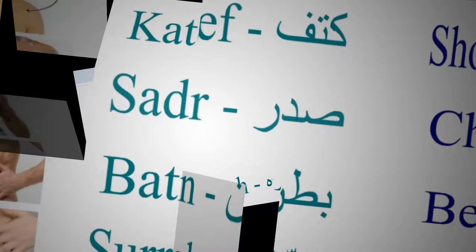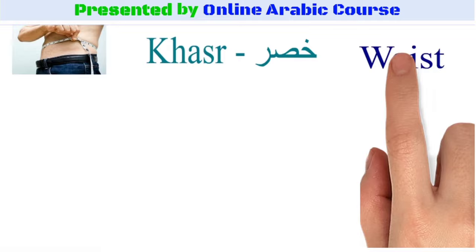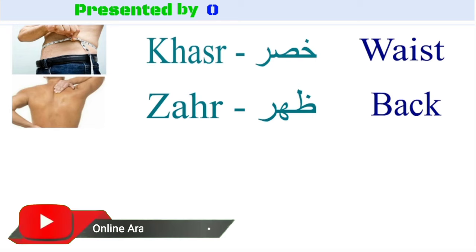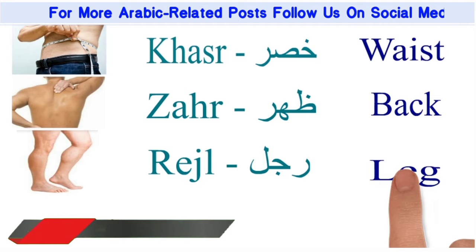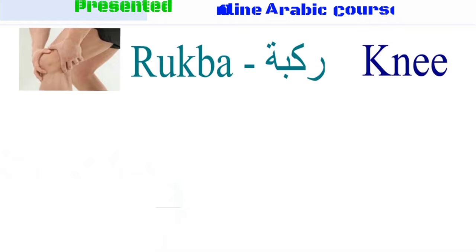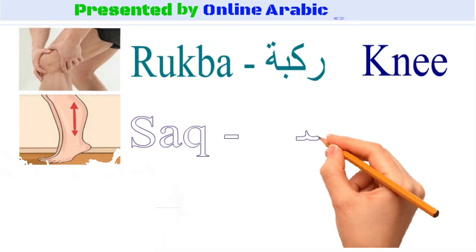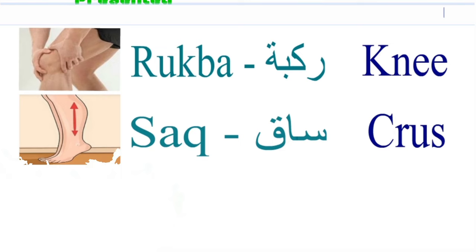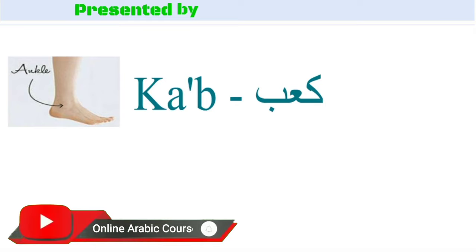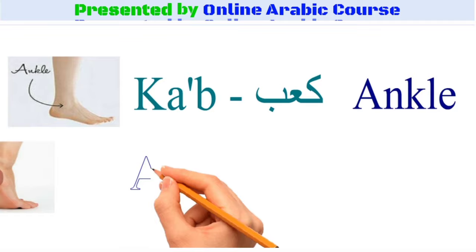Khastr means waist. Zahr means back. Rijl means leg. Fachiz means thigh. Rukba means knee. Saaq means shin. Ka'ab means ankle. Aqib means heel.